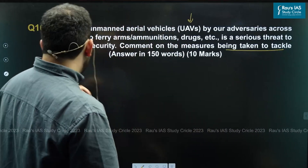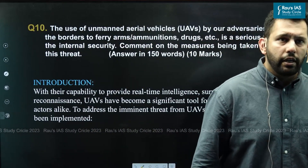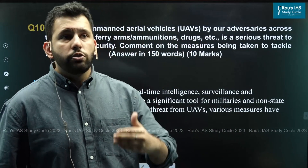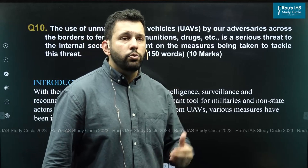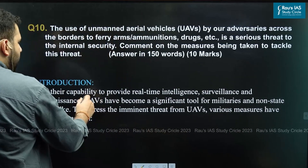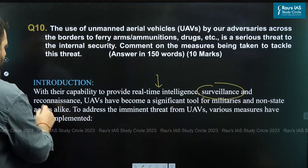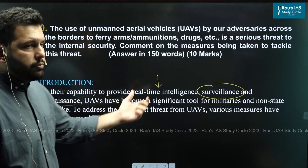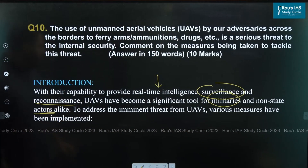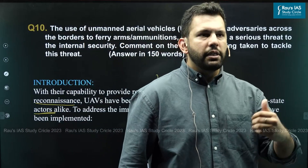We will start our answer with a discussion on what an unmanned aerial vehicle is and how it is now being used both by security agencies and by non-state actors to create a security situation in India. The introduction involves that with the capability of real-time intelligence, surveillance, and reconnaissance, UAVs have become significant for both militaries as well as non-state actors. To address the imminent threat from UAVs, various measures have been implemented.